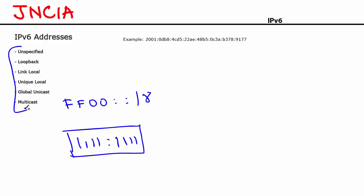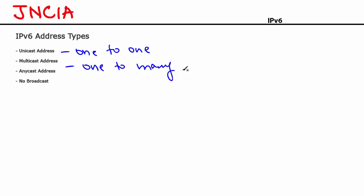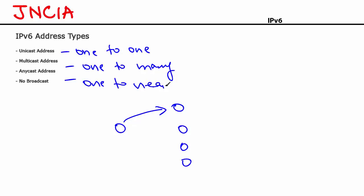Let's now look at the IPv6 address types. There are three different types of addresses in IPv6: Unicast, Multicast, and Anycast. Unicast means one-to-one communication — you have a source and a destination. Multicast means one-to-many, so one computer communicates with multiple hosts. Anycast is one-to-nearest: you have a source and multiple possible destinations, and Anycast sends the packet to the closest destination. Anycast can be written as one-to-nearest or one-to-closest.